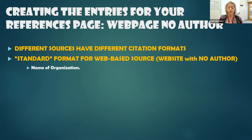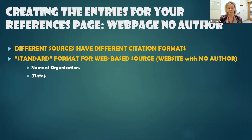First we're going to be looking for the name of the organization since we don't have a specific author. APA rarely — I will not say never — but rarely will a reference entry start with the title. If there is no listed author, you're almost always going to find the organization.